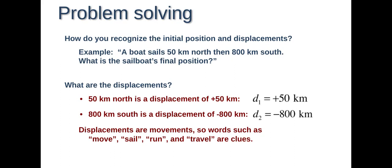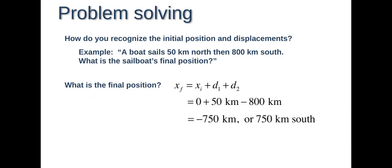So what is the final position? Displacements are movements, so words such as move, sail, run, and travel are clues to let you know what direction you're moving. The final position, we're going to use our equation XF equals XI plus D. Well, we have two D's, so we're going to have D1 plus D2. Our initial position is zero. That's going to be plus 50 minus 800 kilometers. So our final answer is negative 750 kilometers, or since we need a direction, it'll be 750 kilometers south. That is an example of how to do a displacement problem. I have some problems in a Google Doc that I would like you to do after listening to this lecture. Make sure you actually listen and watch the lecture first. If you have any questions, please let me know. Have a great day. Bye.